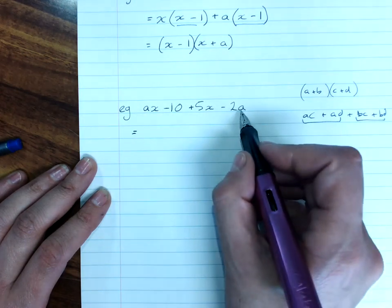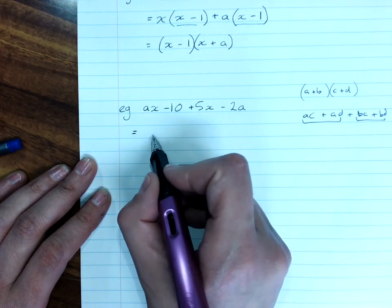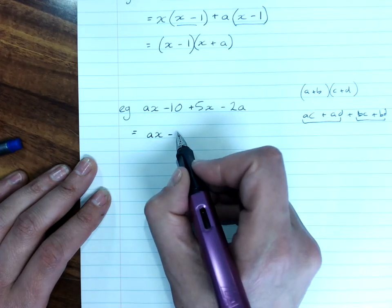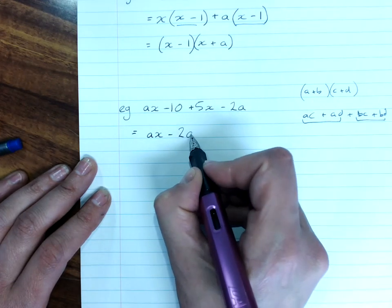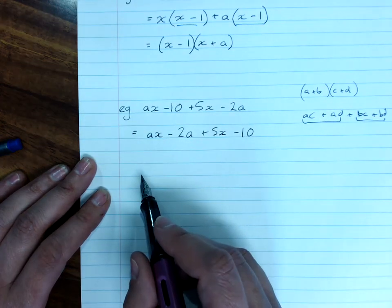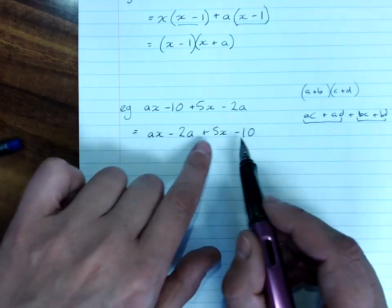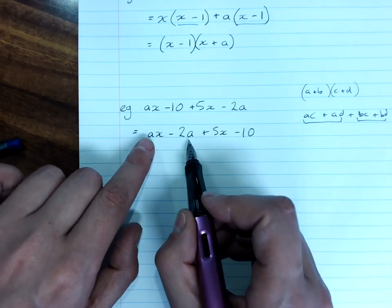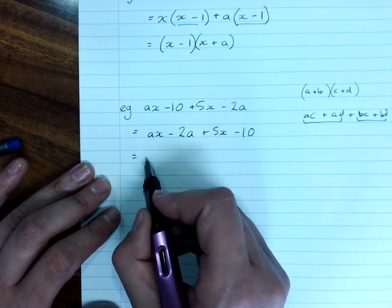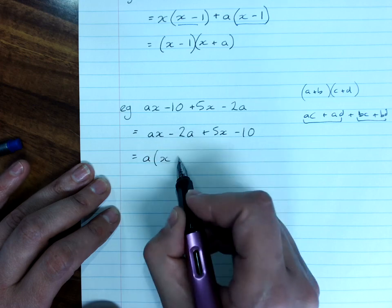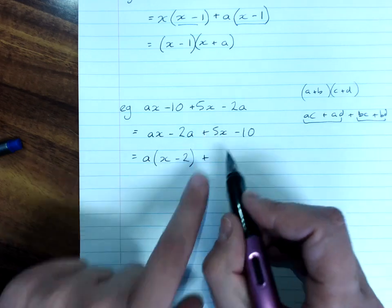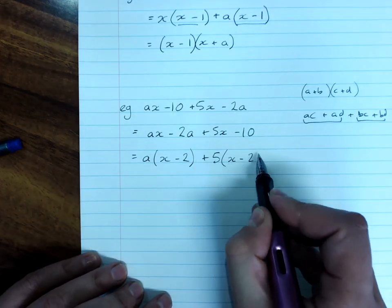So I'm going to go with ax minus 2a plus 5x minus 10. So try to keep a track of what we're doing. I'm keeping the a's together here and the 5 and the 10 together here. Highest common factor of a outside of x minus 2, and that says this should end up as x minus 2 in the brackets, plus 5 outside of x minus 2.